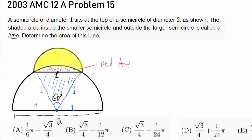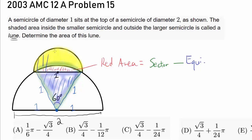We can find the red area by starting with the area of the circular sector and taking away the equilateral triangle inside. And from the red area, we can find the area of the entire smaller semicircle with diameter 1, then simply take away the red area to find the lune. So we know how to go about this question.